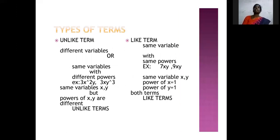Types of terms. Terms are of two types: one is unlike term, another is like term. First, we will discuss unlike term. What is an unlike term? Different variables, or same variables with different powers, are called unlike terms. For example, 3x²y and 3xy³. In this example, we have two same variables x and y, but powers of x and y are different. In 3x²y, x power is 2 and y power is 1. In 3xy³, x power is 1 and y power is 3. So, variables are same but powers are different, so these terms are called unlike terms.